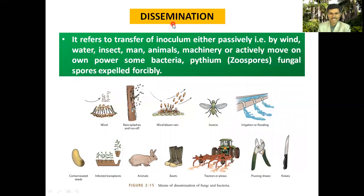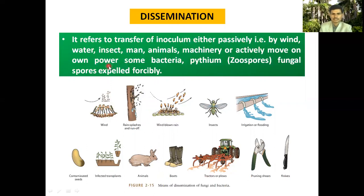Dissemination literally means spreading — it is the next event of disease development. It is the transfer of inoculum by either passive or active agencies. Passive agencies of transfer include wind, water, insects, and humans. For example, a splash of water on an infected area forces spores out. Some animals and humans also act as passive agents. Active dissemination occurs when fungi and bacteria themselves spread from infected host to healthy host.